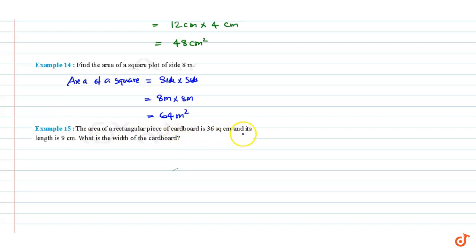We know that area of a rectangular piece equals length times breadth. This equals 36 cm squared. Length is given to be 9 centimeters, so 9 times breadth.